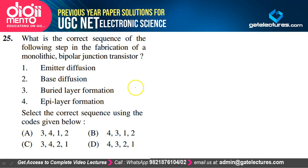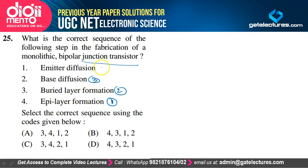The correct sequence of steps in the fabrication of a monolithic bipolar junction transistor: epitaxy (epi) layer formation comes first, then buried layer formation, then base diffusion, and finally emitter diffusion. Option D satisfies the explanation and is the correct option. Many questions from previous papers are repeated, so expect this in the forthcoming examination.